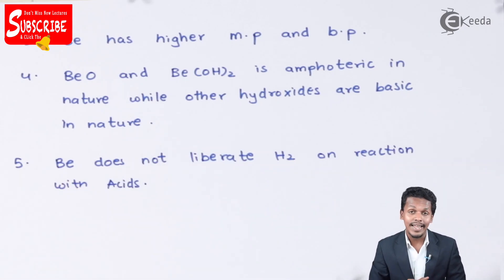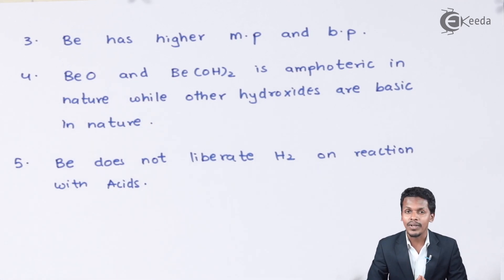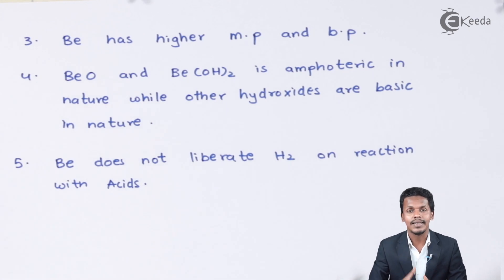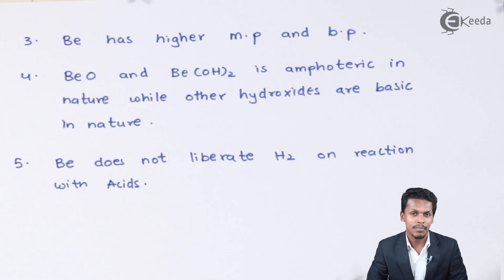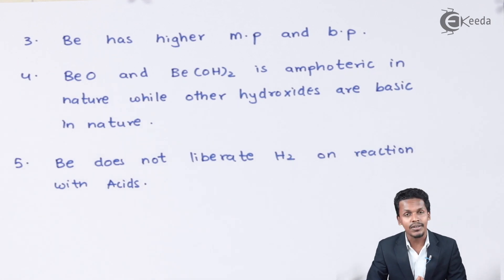Beryllium does not liberate hydrogen gas when reacted with acids like HCl, while other metals like magnesium and calcium liberate H₂ gas when reacted with acids. Beryllium doesn't liberate H₂ gas because of its smaller atomic size and higher density, which makes it play a very exceptional role in group 2.